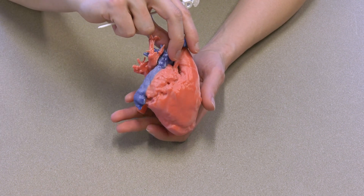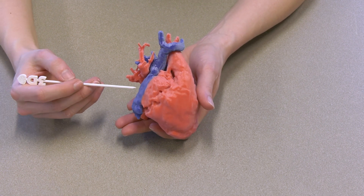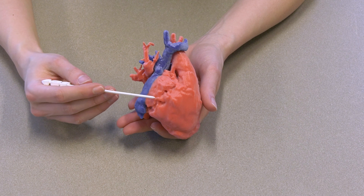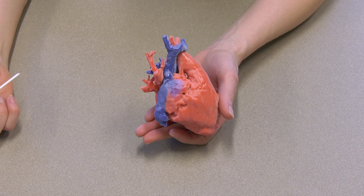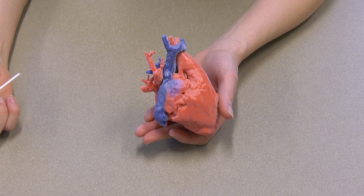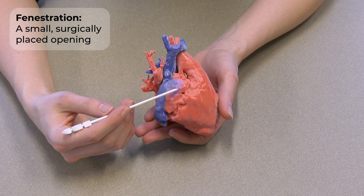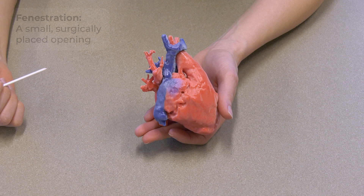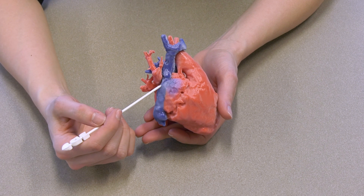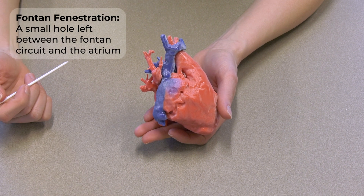The heart I am showing you illustrates how blood would flow if there is no connection between the Fontan circuit and the heart. Now I am going to show you the same heart colored differently to show the flow of blood if there is a fenestration, or a small connection left between the Fontan circuit and the heart. In some cases at the time of surgery, a small hole is left between the Fontan circuit and the heart — this is called a fenestration or a Fontan fenestration.